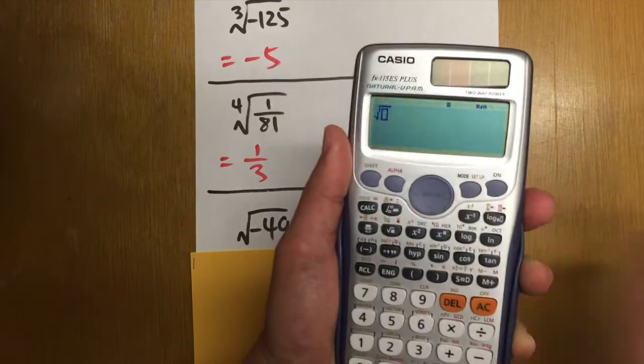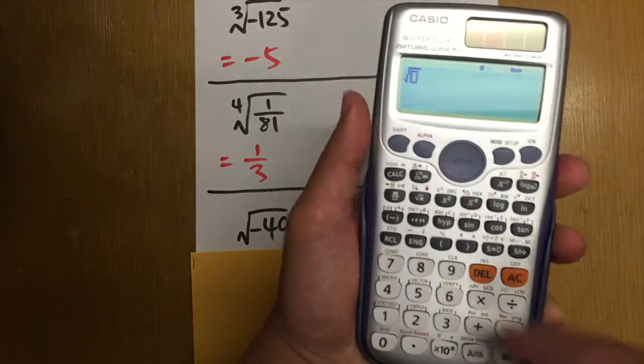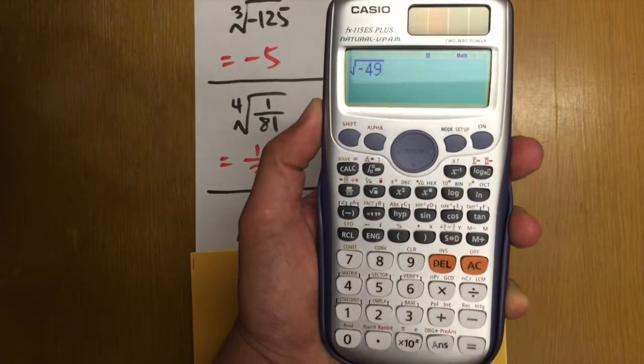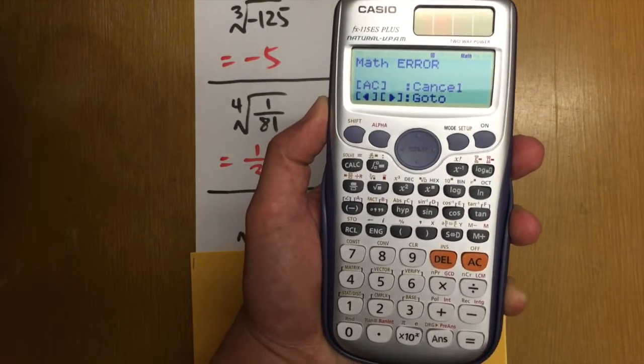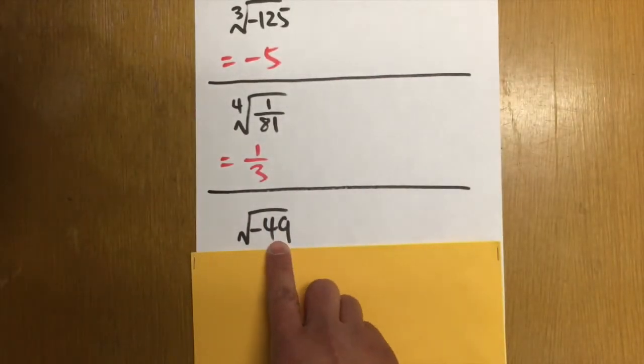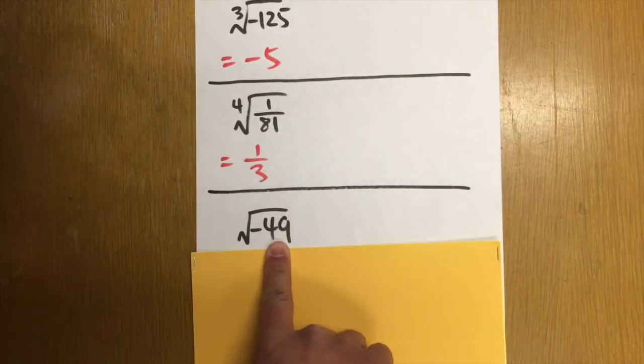Press square root. So this is just a regular square root. But then inside, we have the negative 49. And then press equal. And you see, we got a math error. And this should remind you that we cannot have a negative number inside of the square root.